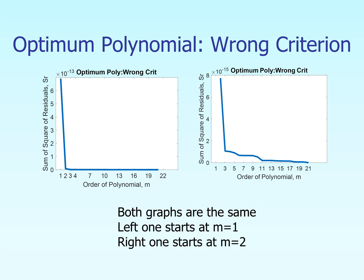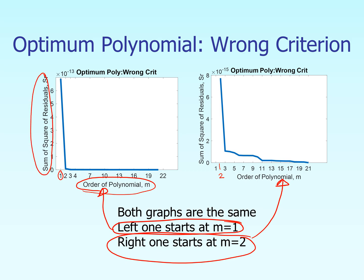If you look at these two graphs, keep in mind that these two graphs are exactly the same. They are drawn as a function of the order of the polynomial. This particular left graph starts with m equal to 1, and this right graph starts with m equal to 2. So they're exactly the same graph. However, the starting point on this one is m equal to 1, and the starting point on this one here is 2. What we are plotting here is the sum of the square of the residuals as a function of the order of the polynomial.